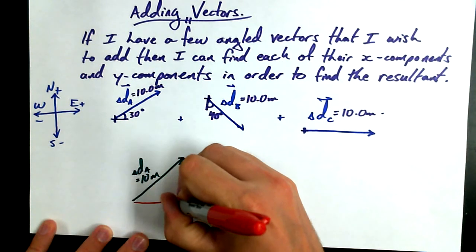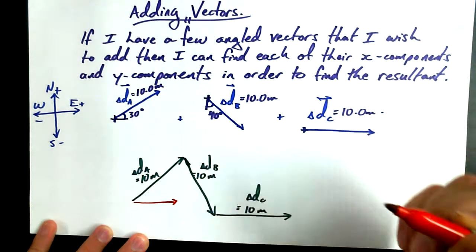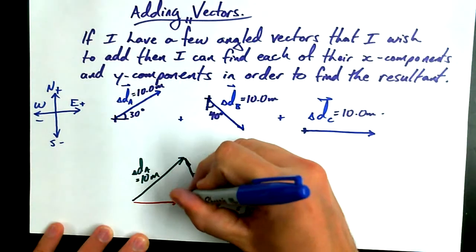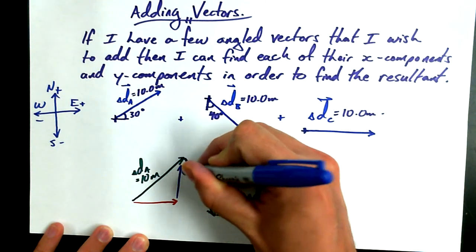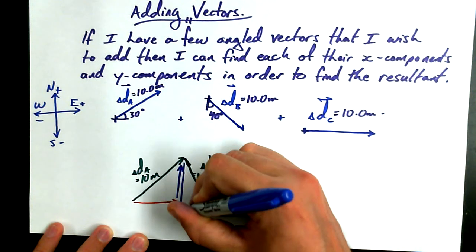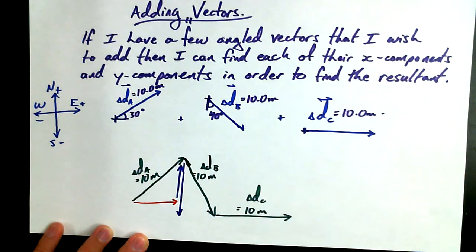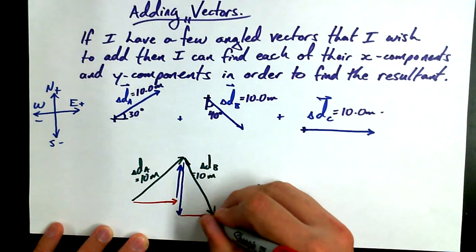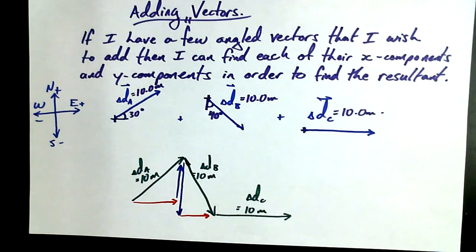The x component for triangle A is this here. The y component for triangle A is this here. The y component for triangle B would be this, and the x component for triangle B would be here. Is there a y component for triangle C? Is it a triangle? Just a horizontal line. Okay? So all of these angled vectors can be reduced down to triangles, so long as they're not straight x, y vectors.